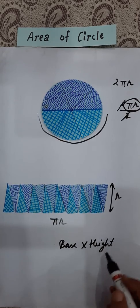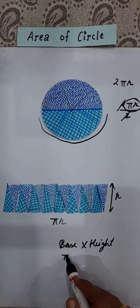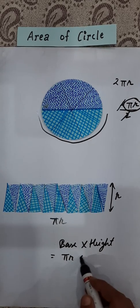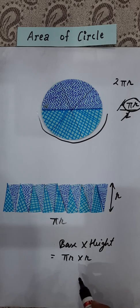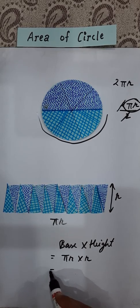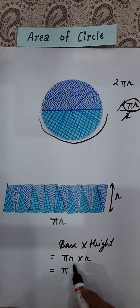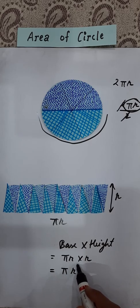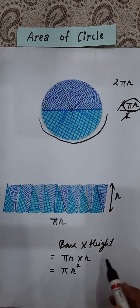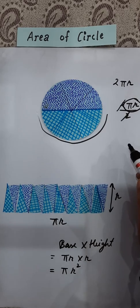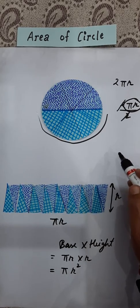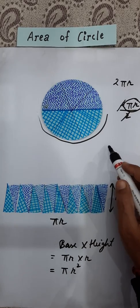Now, base is πr and height is radius. That is why area of this circle becomes πr into r, which means πr². You know the laws of exponents that whenever the base is same, in that case, you add the exponent.